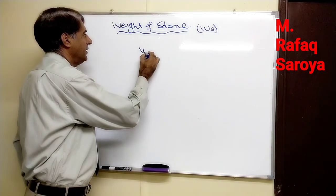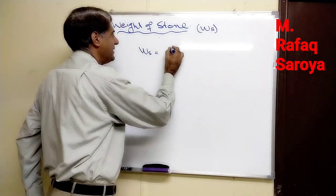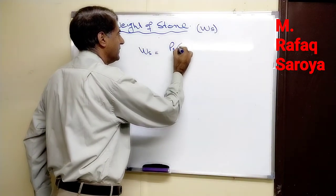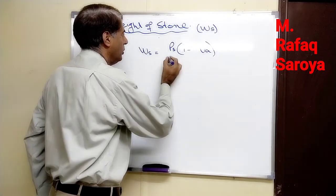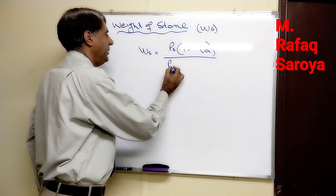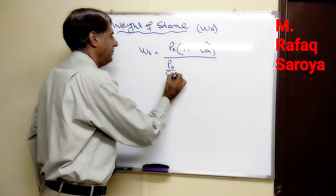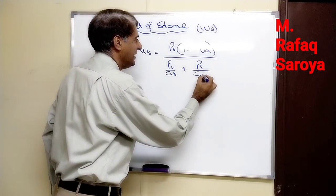How we will calculate it is: Ws is equal to Ps times 1 minus Va, divided by the quantity Pb divided by Gb plus Ps over Gse.